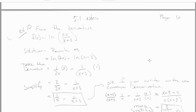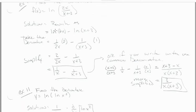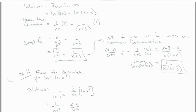Example 10: find the derivative of f(x) = ln(2x / (x + 3)). First, undo the division using properties of logs, so we get ln(2x) minus ln(x + 3). Then take the derivative of each term: the derivative of ln(2x) is 1/(2x) times 2, and the derivative of ln(x + 3) is 1/(x + 3) times 1. That becomes 1/x minus 1/(x + 3).